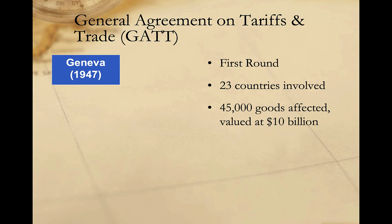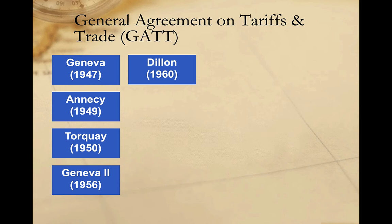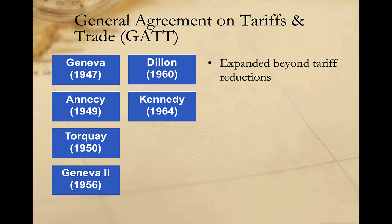The first round, dubbed the Geneva Round, took place in 1947 and involved 23 countries. The final agreement reduced tariffs on more than 45,000 goods, affecting some 10 billion dollars worth of trade. The next four rounds continued to liberalize international trade by reducing tariffs on a wider and wider array of goods.